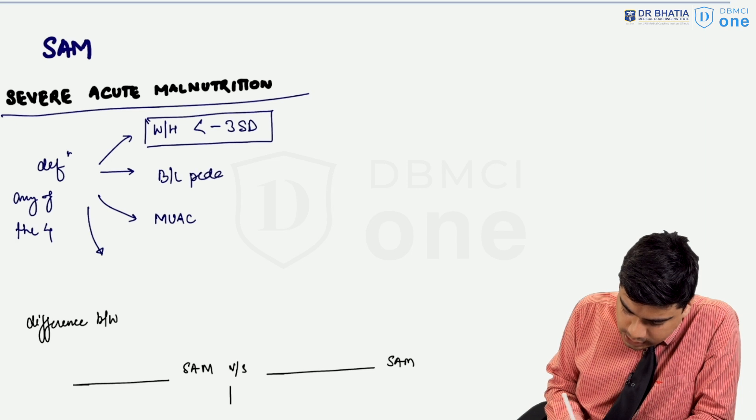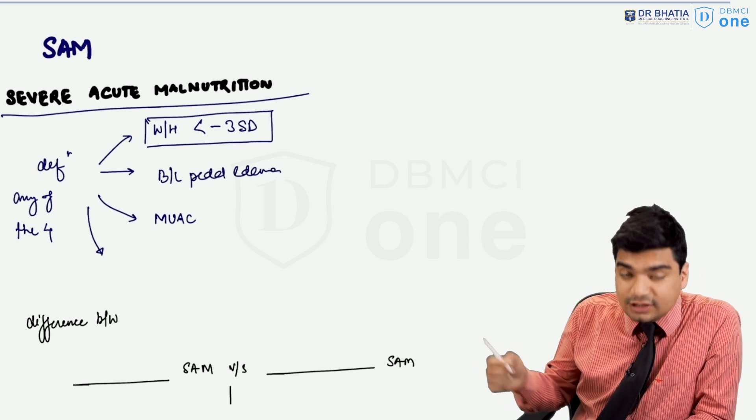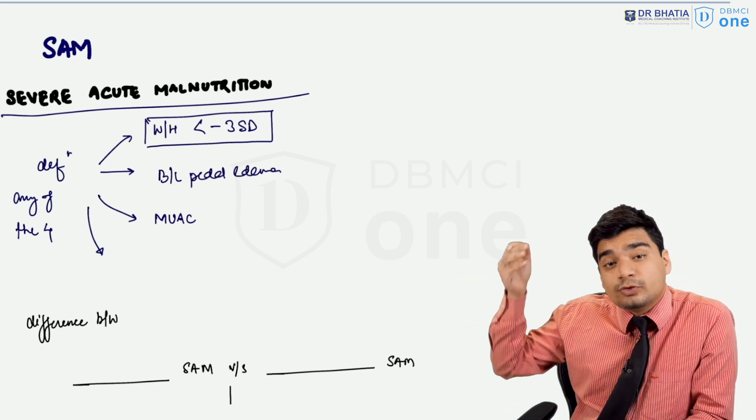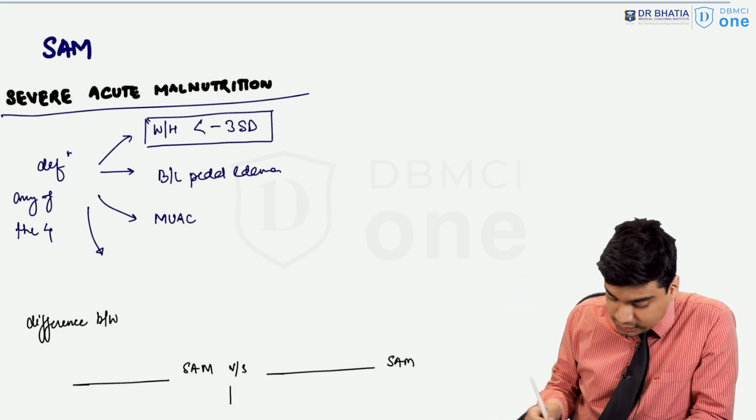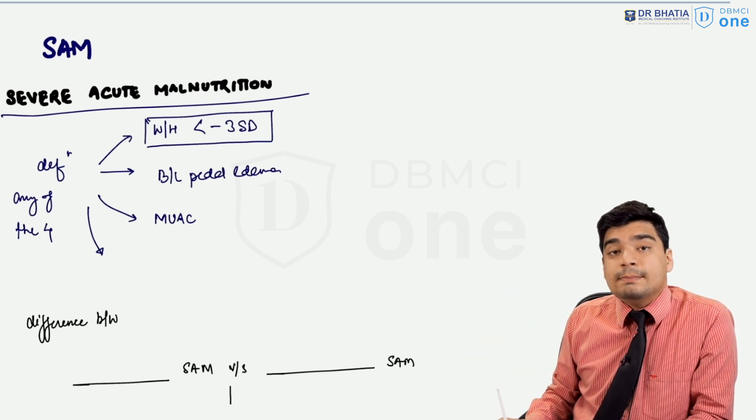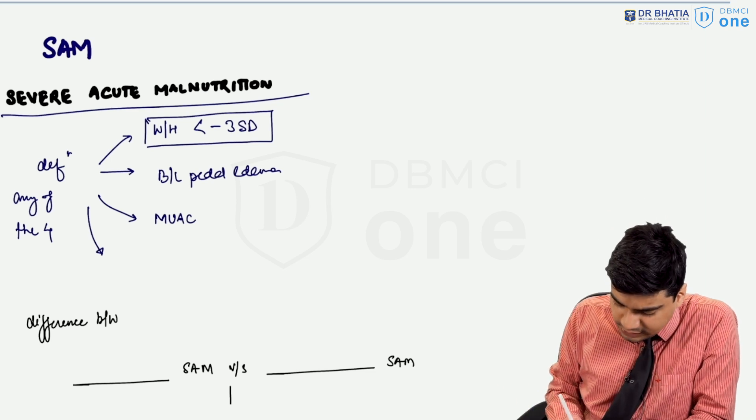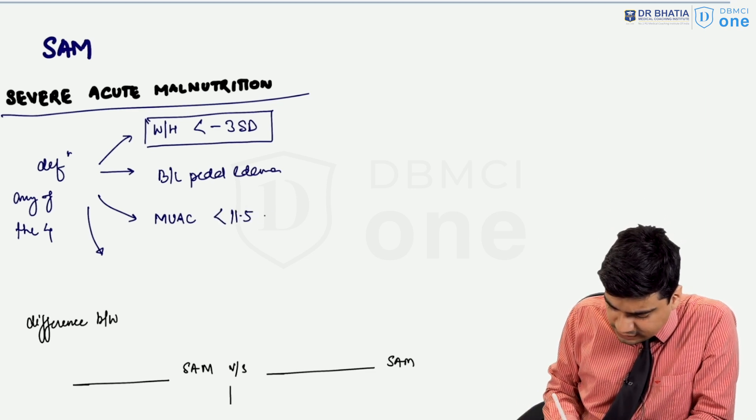Obviously, if there is bilateral pedal edema, it means that there is so much protein loss causing edema, hence severe acute malnutrition. The third criteria is if the middle upper arm circumference (MUAC) is less than 11.5 centimeters.